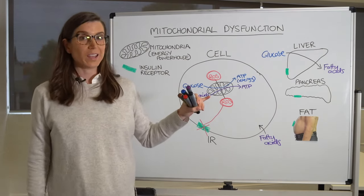So what can you do to try and improve your mitochondrial function? Number one — and this probably is the most important thing — is exercise. The rest aren't in any particular order, but exercise is definitely number one.